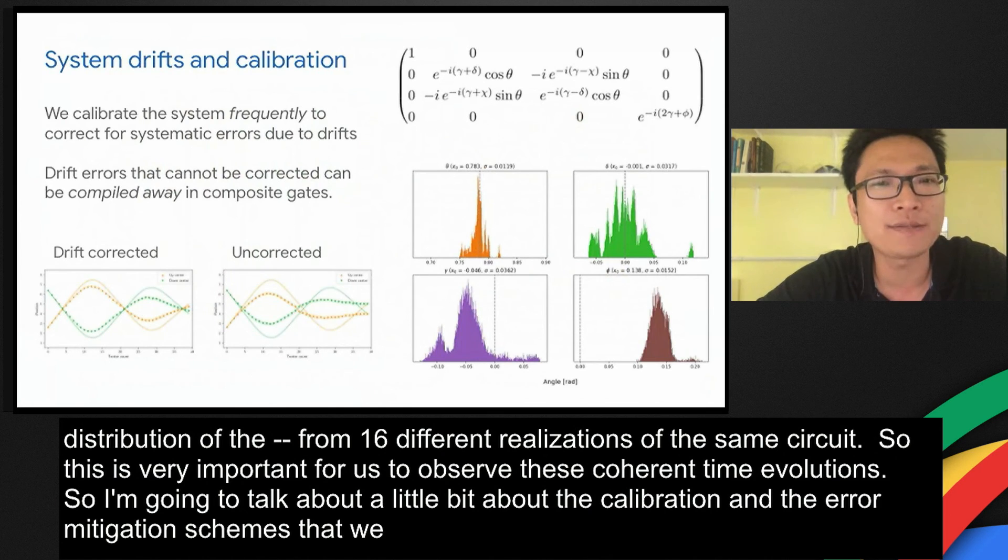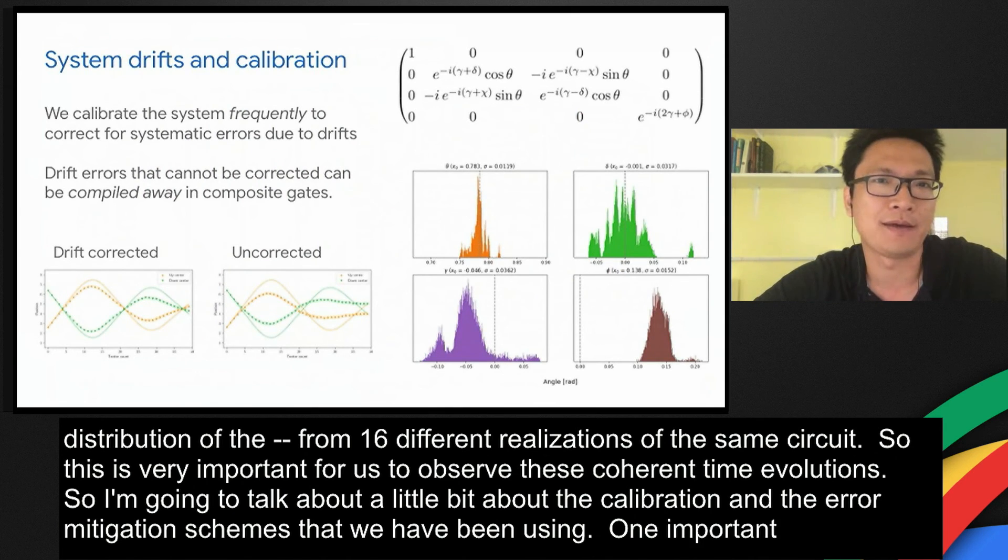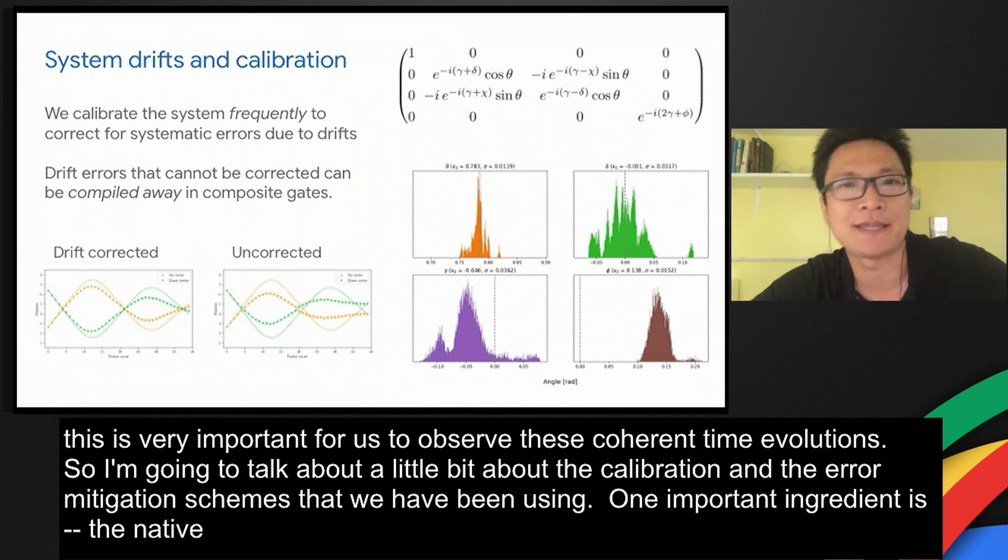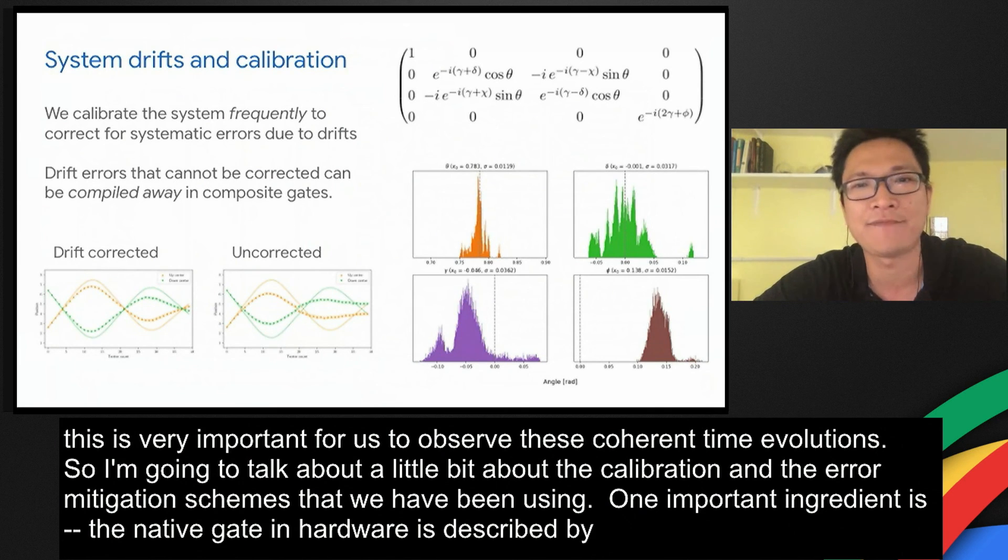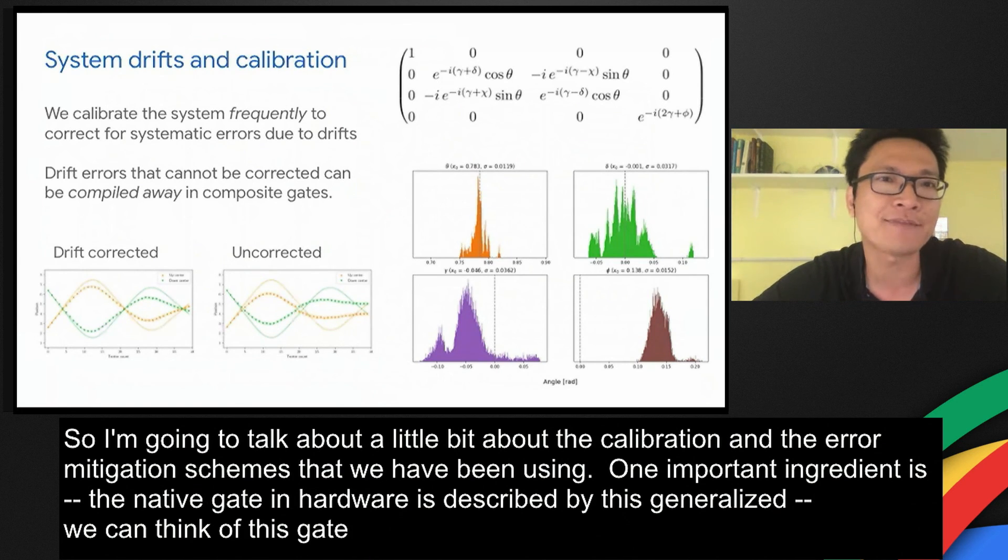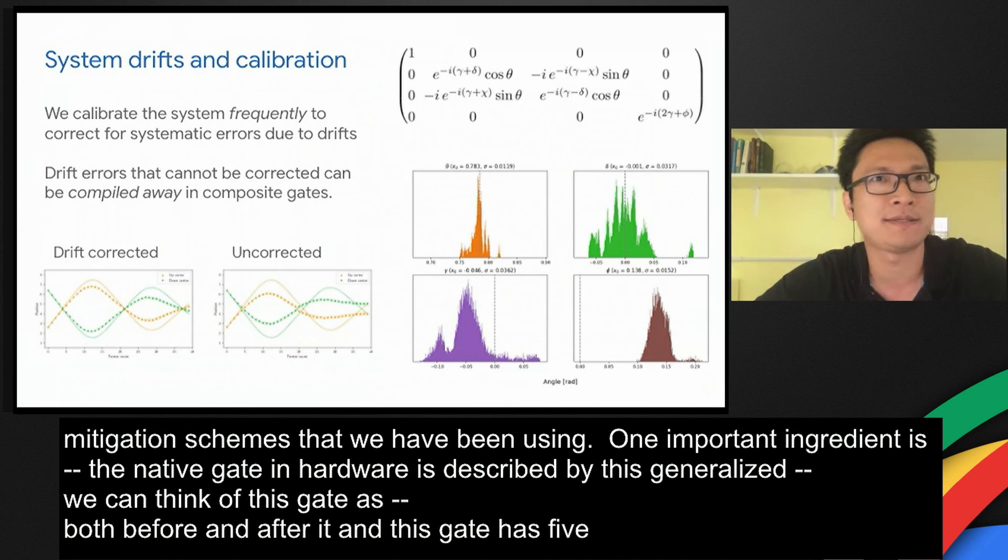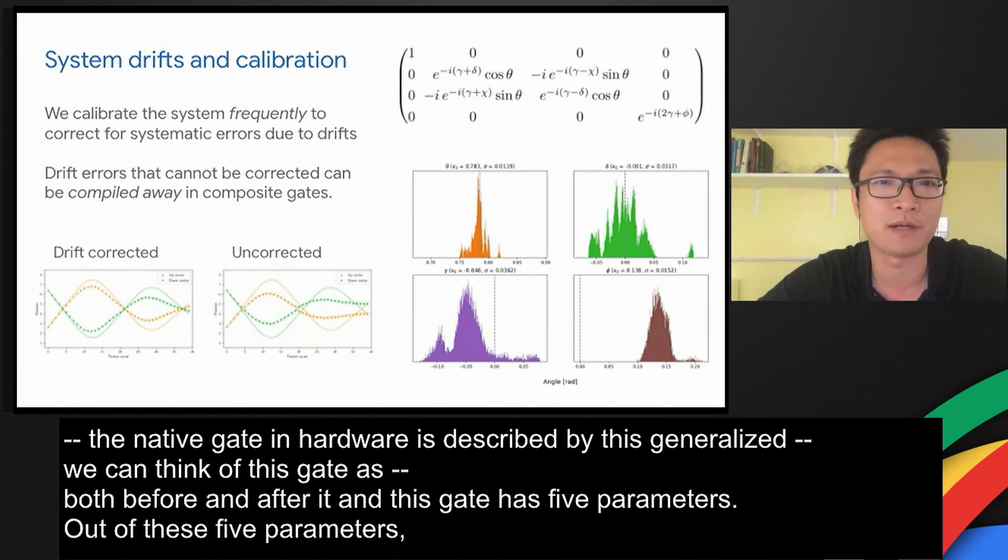One important ingredient in this experiment is we use this fast calibration protocol that Hartmut just talked about to mitigate drift errors. The native gate in our hardware can be described by this a little bit generalized f-sim gate. You can think of this gate as the f-sim gate with some single qubit phases, both before and after it. This gate has five parameters. Out of these five parameters, four parameters are very important to our experimental result.